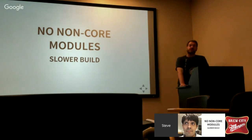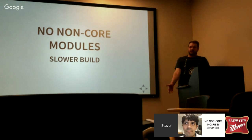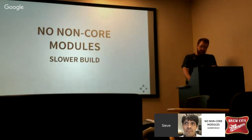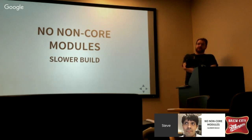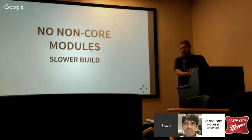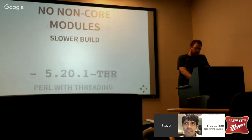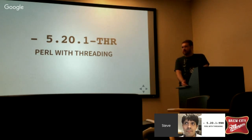If you specify three version numbers, you get no non-core modules. This is going to be a slower build, which means that if you reach that 50-minute time limit, your build will fail. But this is important for when you need to test your dependencies — the entire reason I use Travis is really to test to make sure that I'm declaring my dependencies correctly. You can also specify that you want threaded Perls versus non-threaded Perls, which is an important distinction, especially if you're using XS.